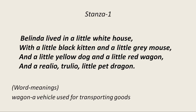Belinda lived in a little white house with a little black kitten and a little gray mouse, and a little yellow dog and a little red wagon, and a realio-trulio little pet dragon. There was a girl named Belinda who lived in her little white house with many pets: a black kitten, a gray mouse, a yellow dog, and a pet dragon. She also had a red wagon — a vehicle used for transporting goods. 'Realio-trulio' means really, truly. The poet has intentionally used wrong spellings — this literary device is called poetic license.